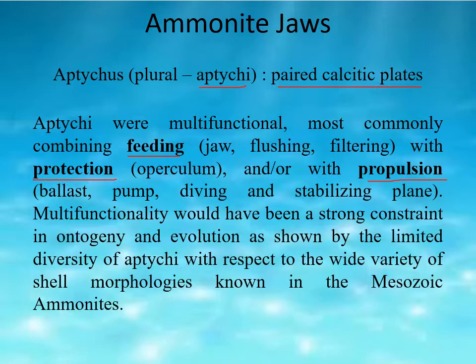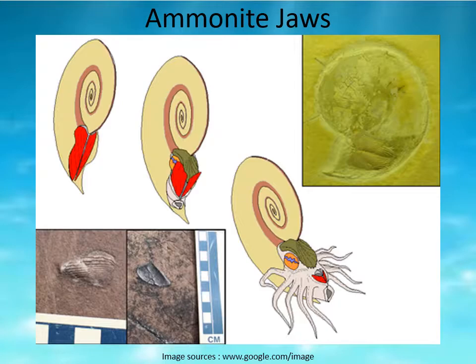This is due to an evolutionary law: when an organ is used for multiple functions, it is constrained by those functions and shows fewer varieties. Aptychus is thus an example of such an organ — multifunctional in ammonites and therefore limited in diversity. Here is a picture showing how an aptychus closes the aperture; the red portion shows where the aptychus closes the aperture opening, and here is a fossil record where the aptychus is found.